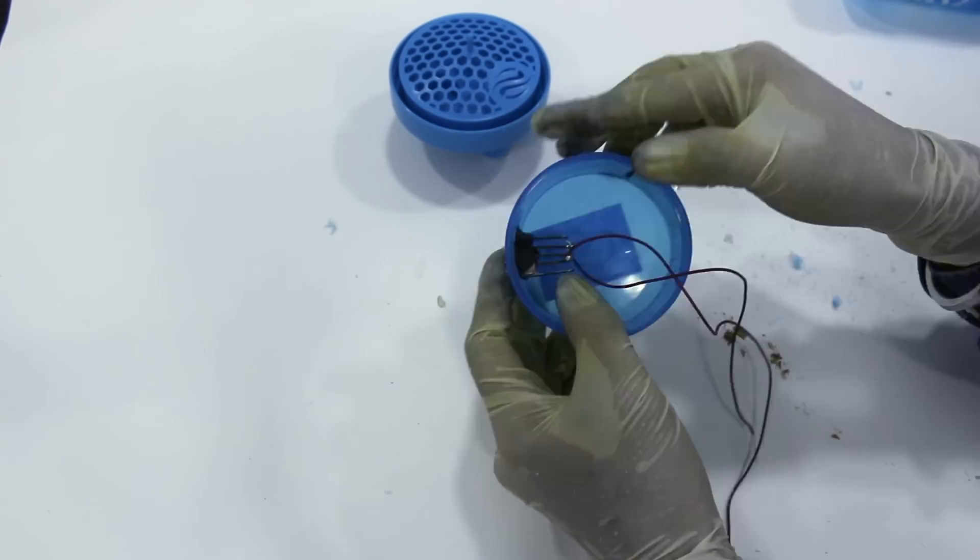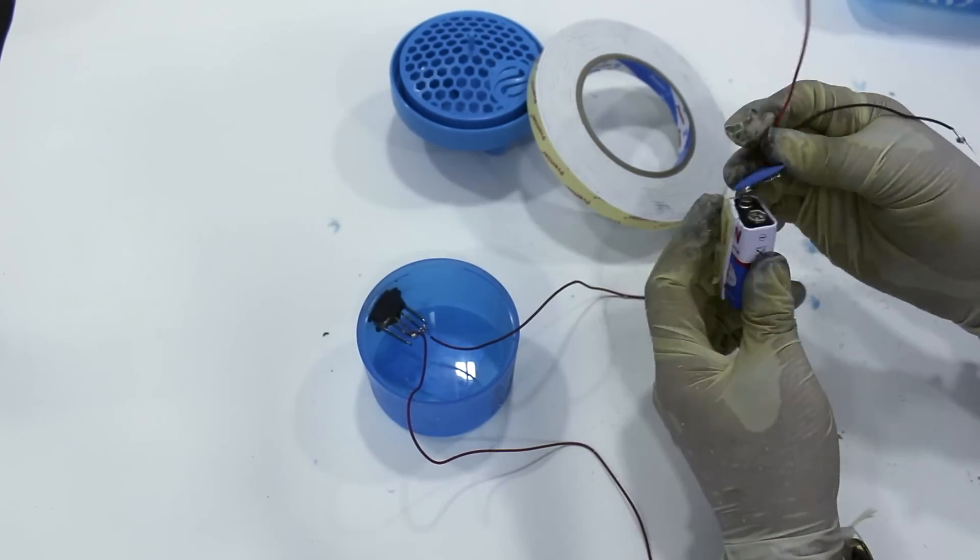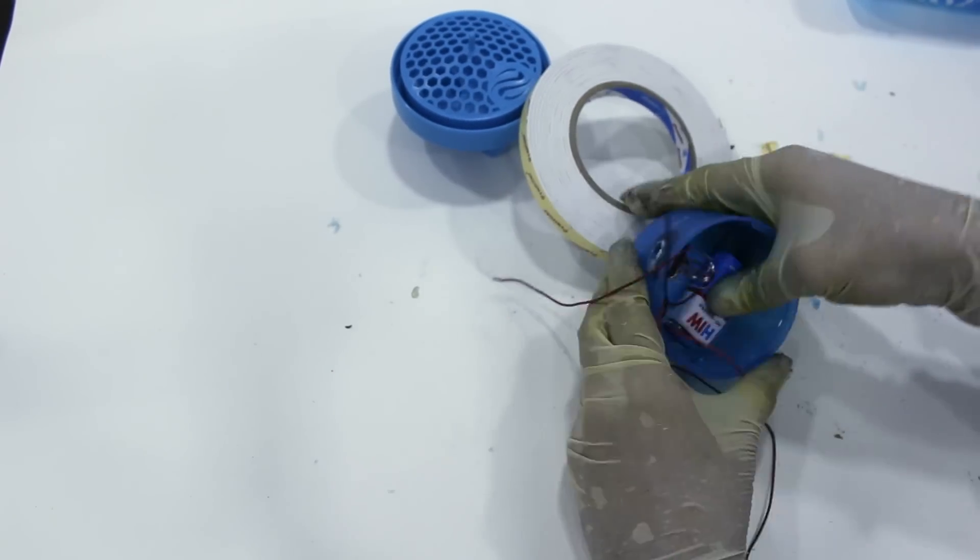After installing the switch, we make the main circuit of the project with the small motor, the switch, and a 9-volt battery.